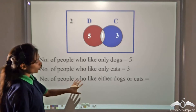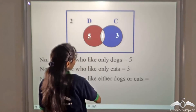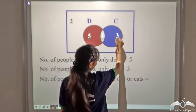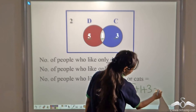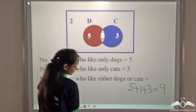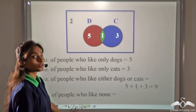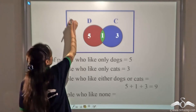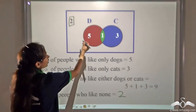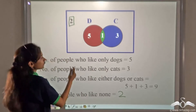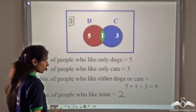People who like either dogs or cats or both: five like only dogs, one likes both, and three like only cats, giving five plus one plus three — nine people total. Two people like neither dogs nor cats. You can see how Venn diagrams let you classify who likes dogs, cats, both, or none.